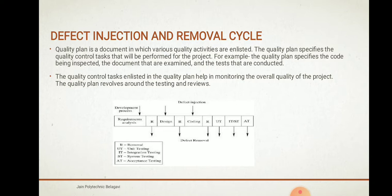The quality plan contains the code to be inspected, the documents, and the tests that will be conducted. The quality control tasks enlisted in the quality plan help in monitoring the overall quality of the project. As you can see in the diagram, the phases involved include requirement development, requirement analysis, design — where we remove defects — then coding with defect injection followed by defect removal, unit testing, integration testing, system testing, and acceptance testing.